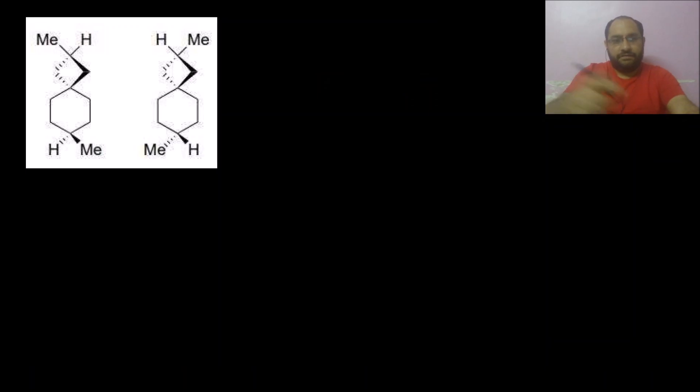At first look, you can see that they are non-superimposable mirror images of each other. This is above the plane and this is below the plane - hydrogen, methyl is away, and here also hydrogen is away.